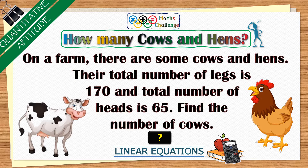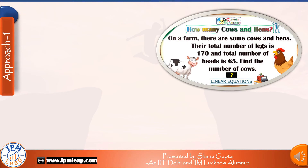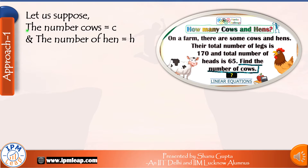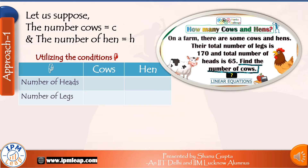But let us discuss the conventional method first. Usually, how do we go about solving such questions? We look at the objective first — find the number of cows. Since it's an unknown number, we take a variable for this number. Let us suppose the number of cows is c. Since we don't know how many hens there are, we take another variable for the number of hens, say h. Now looking at the question, there are two conditions given: number of heads and number of legs. Our next step is to express the number of heads and legs in terms of c and h.